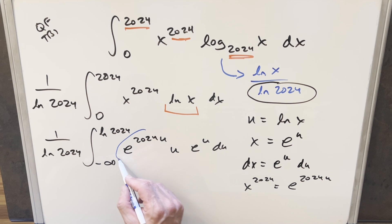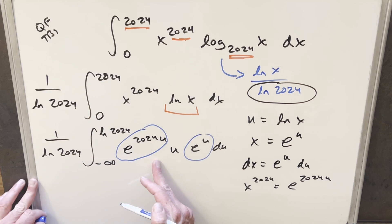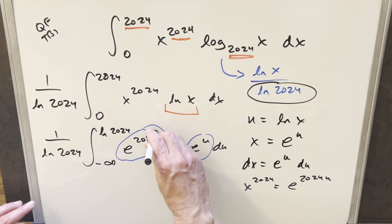And then now we've got the same base here. So I can multiply those together, add the powers. And then this here is going to become e to the 2025 u.